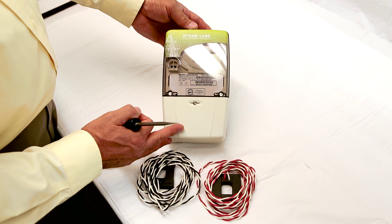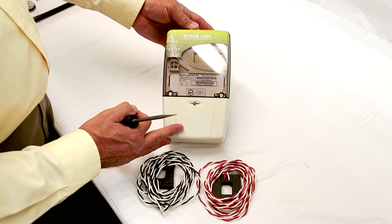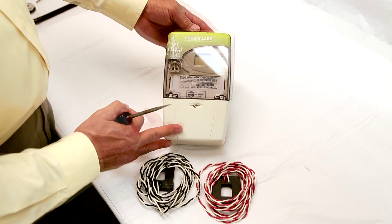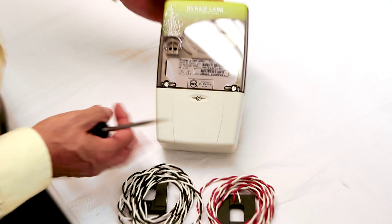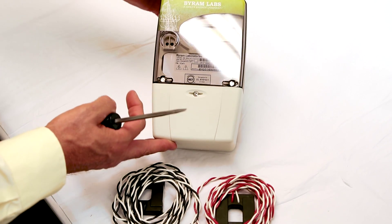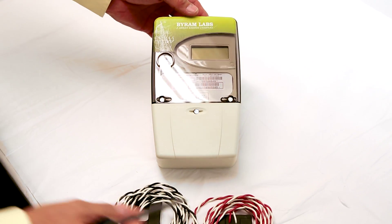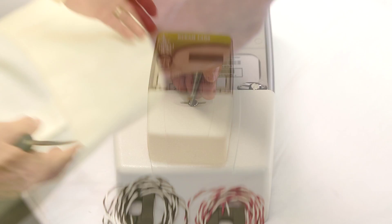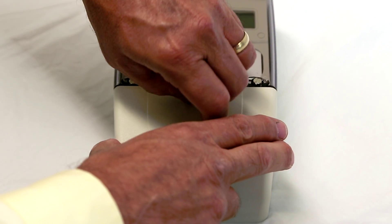This video demonstrates the connections for the Byram single phase three wire meter. This meter is applicable to either 240 or 120-208 service. To access the wiring, remove the bottom cover.